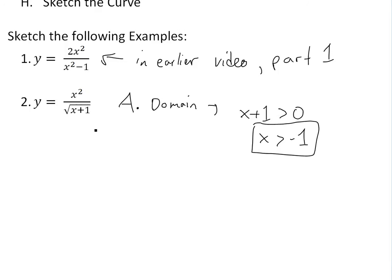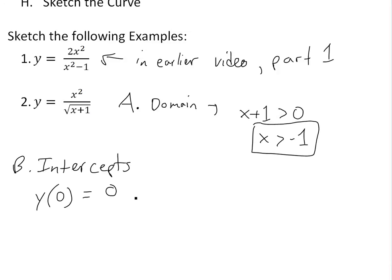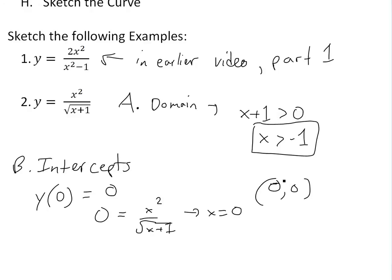Now looking at the intercepts — x and y intercepts. To get the y intercept, we put x equals zero, and this gives zero. To get the x intercepts, we set y equal to zero: x squared over square root of x plus one equals zero, which gives x equals zero. So both the x and y intercepts are at (0, 0) — that's the only point where they both intersect.